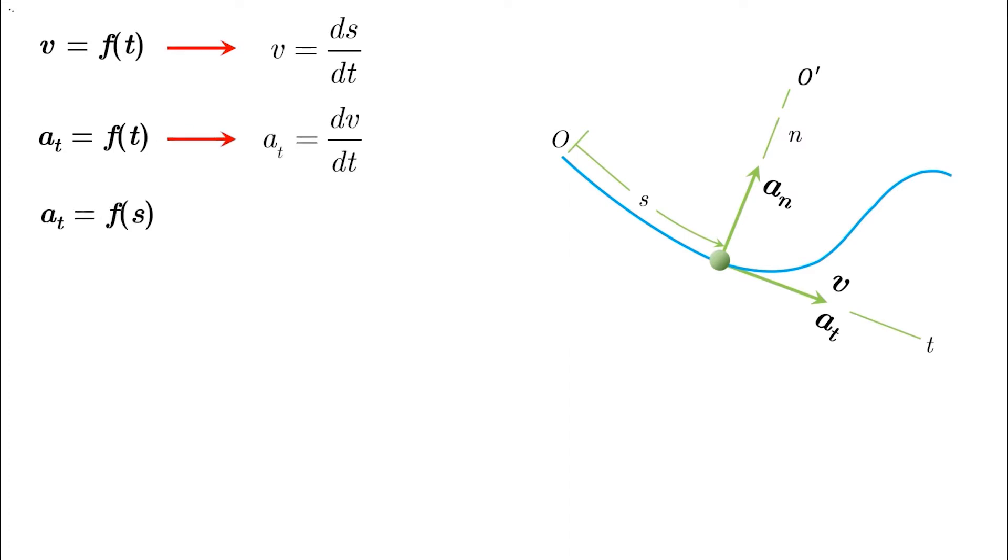But if At is defined as a function of displacement, use At ds equals VdV, and pay attention also to some cases where At is a function of theta, so you need to use the definition of ds, which is rho d theta.